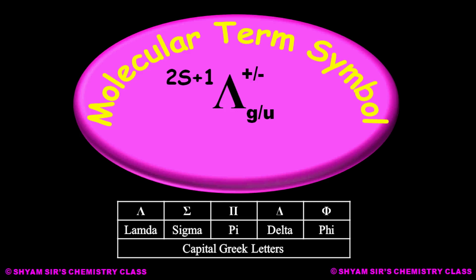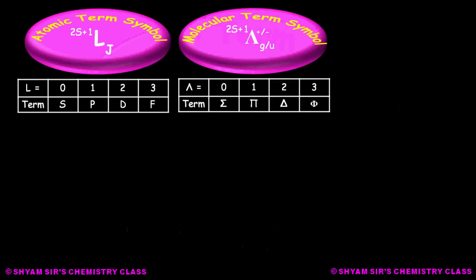Let us see how to calculate the molecular term symbol. Just as in the atomic case where L equal to 0, 1, 2, 3, 4 gives terms S, P, D, F, G — similarly here, for different Λ values there will be different terms. For Λ equal to 0, 1, 2, 3, the terms will be Σ (sigma), Π (pi), Δ (delta), Φ (phi), and so on.